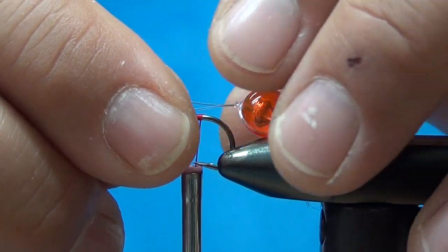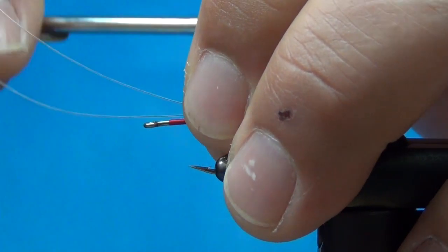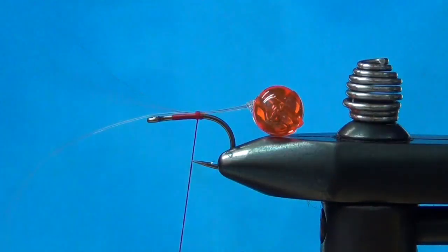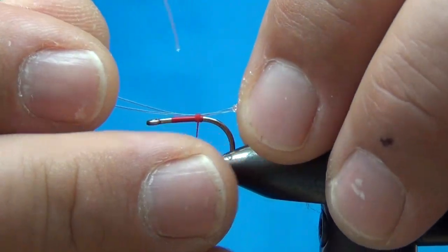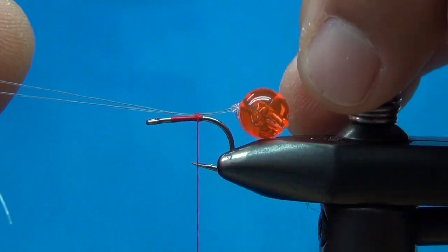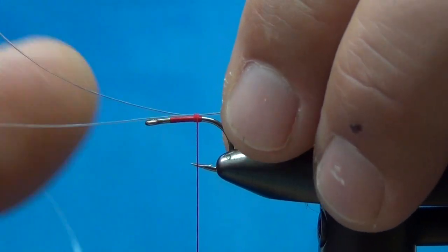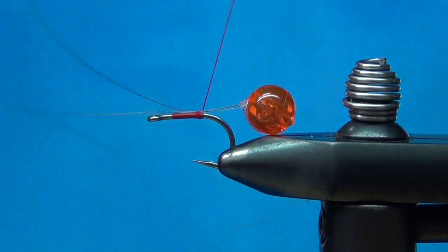I'll tie it right here towards the back of the hook, leave about a hook gap sticking out the back. You can gauge that, pull it back or forth however you want. I usually go about a hook gap sticking out, then cinch this down pretty tight.